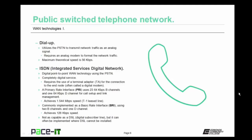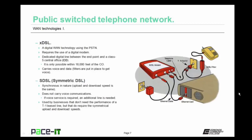XDSL is the term for generic DSL. DSL is a digital WAN technology that utilizes the PSTN and requires the use of a digital modem. It uses a dedicated digital line between the endpoint and a Class 5 central office. In order for the most basic forms of DSL to be installed, you have to be within 18,000 feet of the CO. DSL is capable of carrying voice and data — when it carries both, filters are put in place so the voice signal comes through without interference. First up in DSL types is Symmetric DSL — SDSL — which is synchronous, meaning upload and download speeds are the same. SDSL does not carry voice communication, so an additional line is needed for voice service.